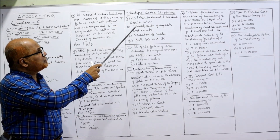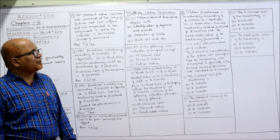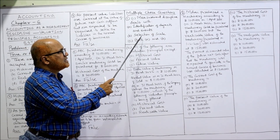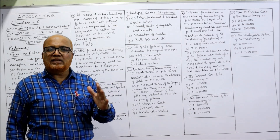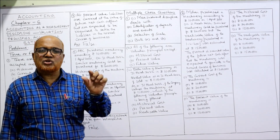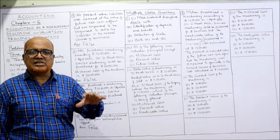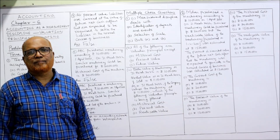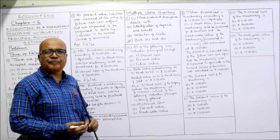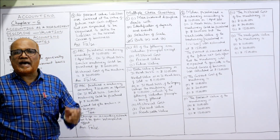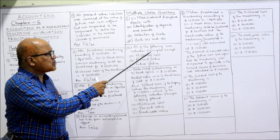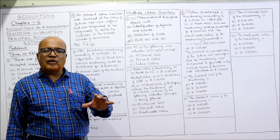Now some multiple choice questions. First: what does measurement discipline deal with? Three options are given: (a) identification of objects and events, (b) selection of scale, or (c) both A and B. In the first video I explained that measurement discipline deals with identification of events and transactions as well as selection of a scale. Both come under measurement discipline, so the answer is both A and B.